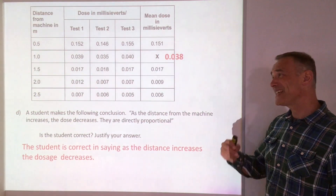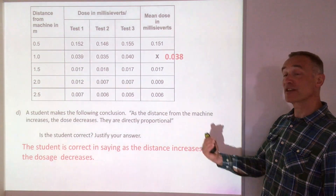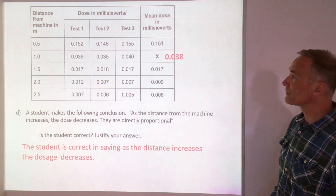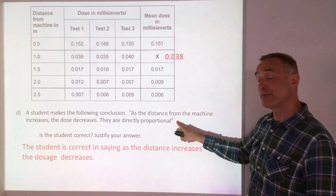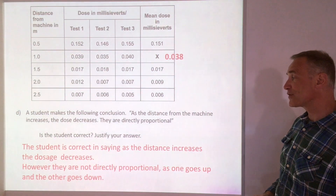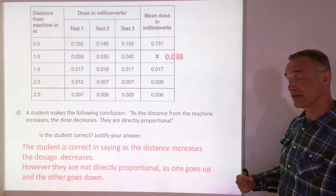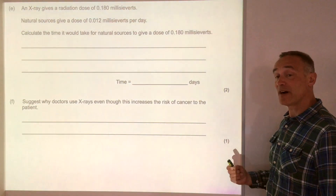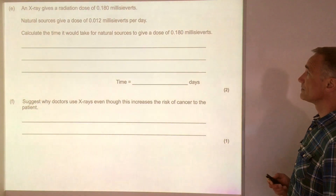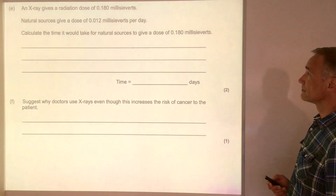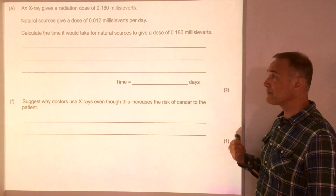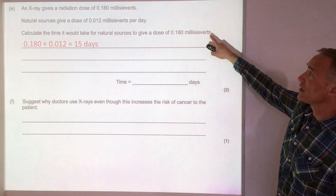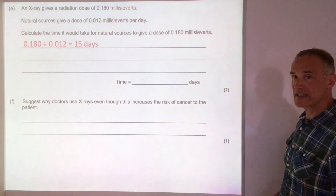The student is half right. They are correct in saying as the distance increases the dosage decreases. But they're not right that they are directly proportional — as one goes up the other goes down, so they cannot be directly proportional. For the second part of the question: it's just a maths question — total dosage divided by dosage per day gives 15 days. The suggest question asks why doctors use x-rays although they increase cancer risk: the benefits of being treated outweigh the risks.